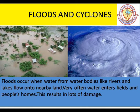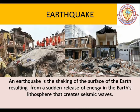Cyclones occur in coastal areas when strong winds accompany very heavy rainfall. In India, the states of Odisha, Andhra Pradesh, Tamil Nadu, Assam and West Bengal are very cyclone prone.